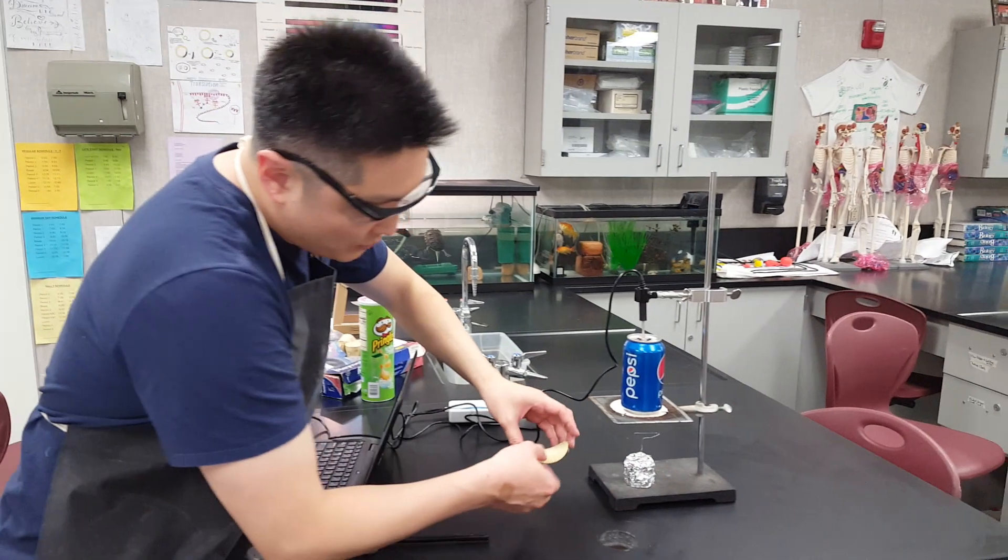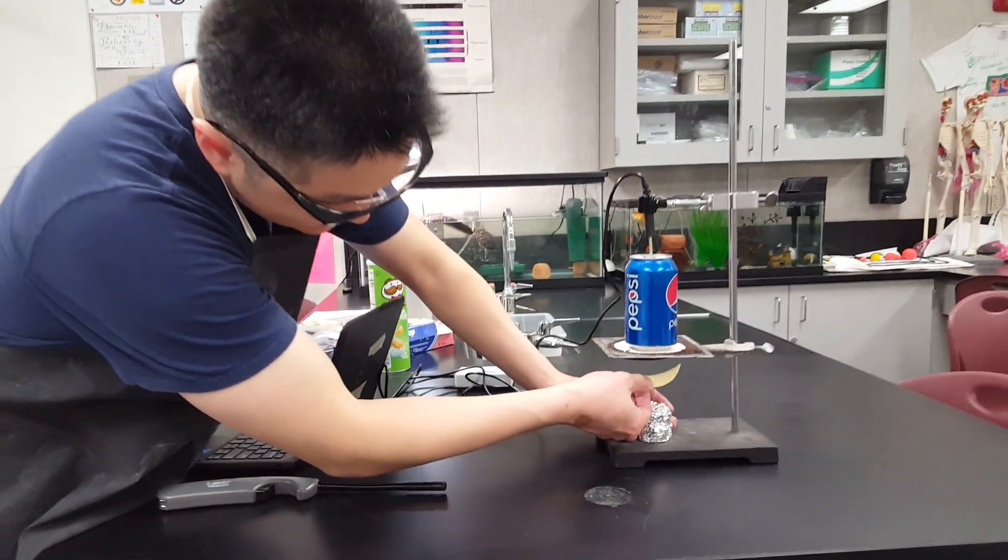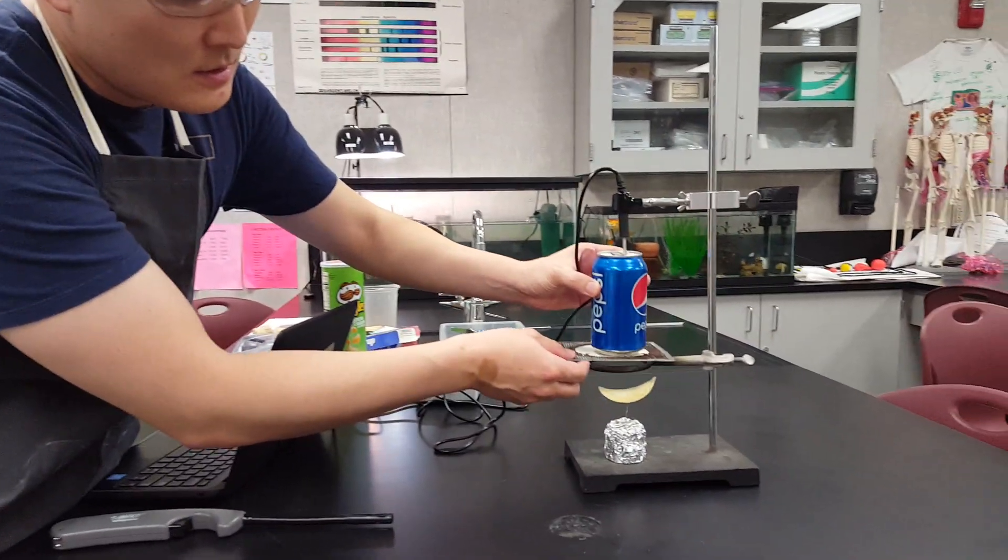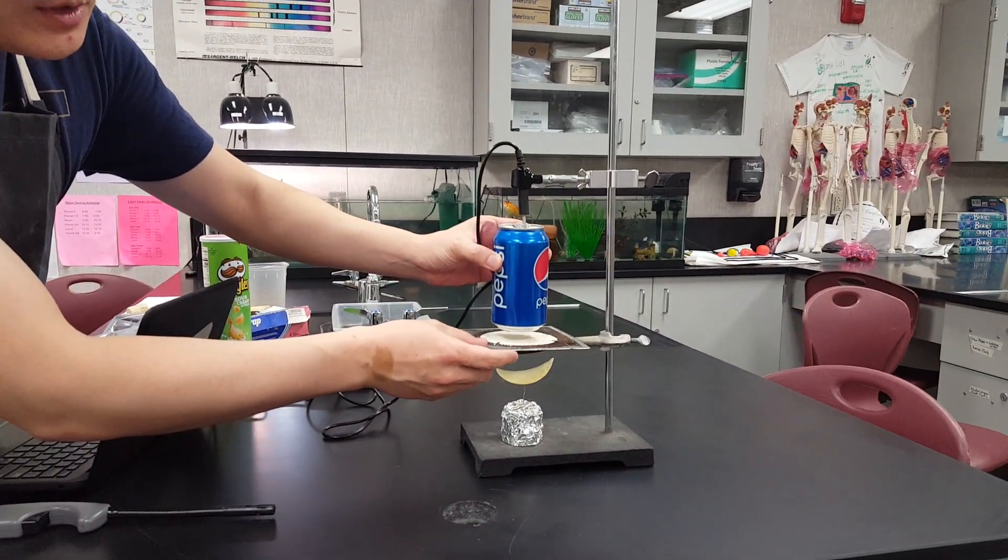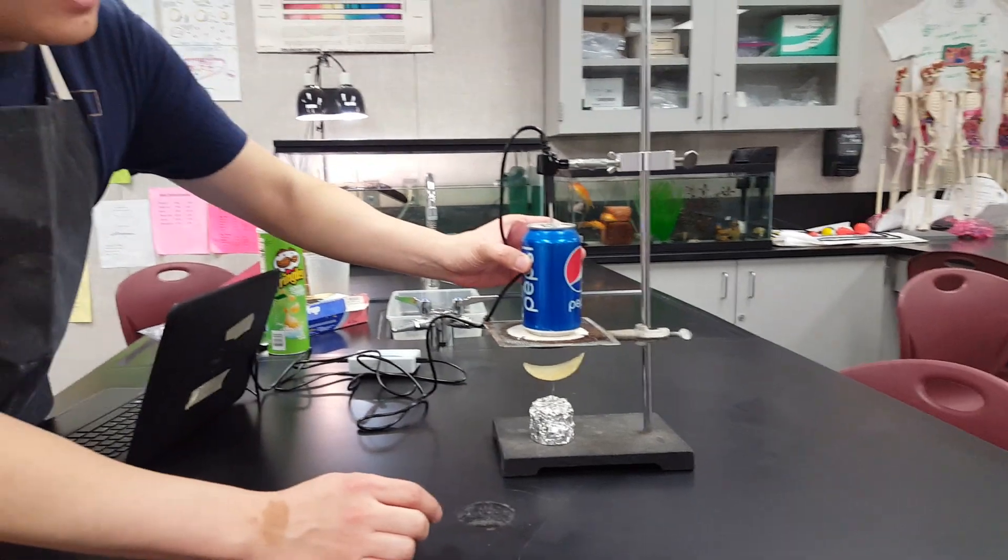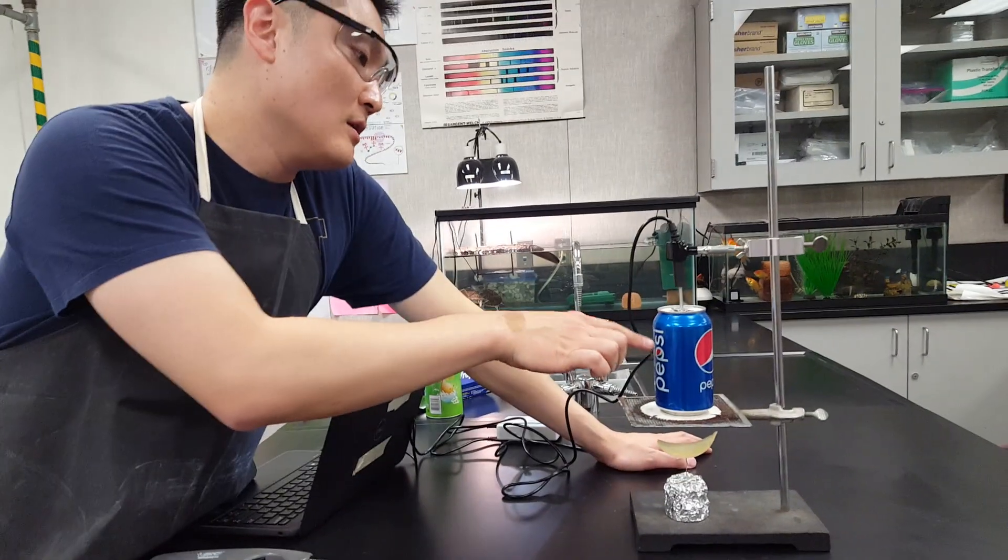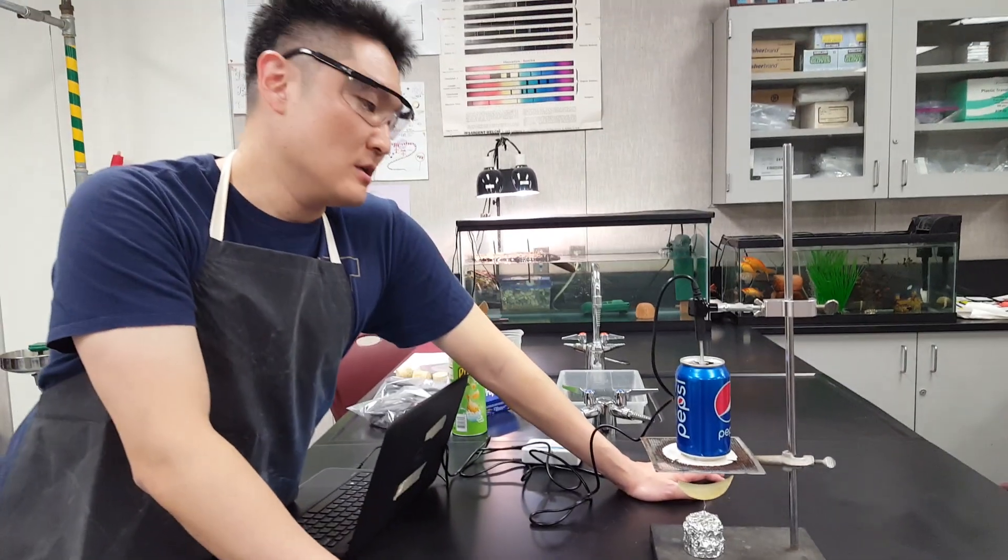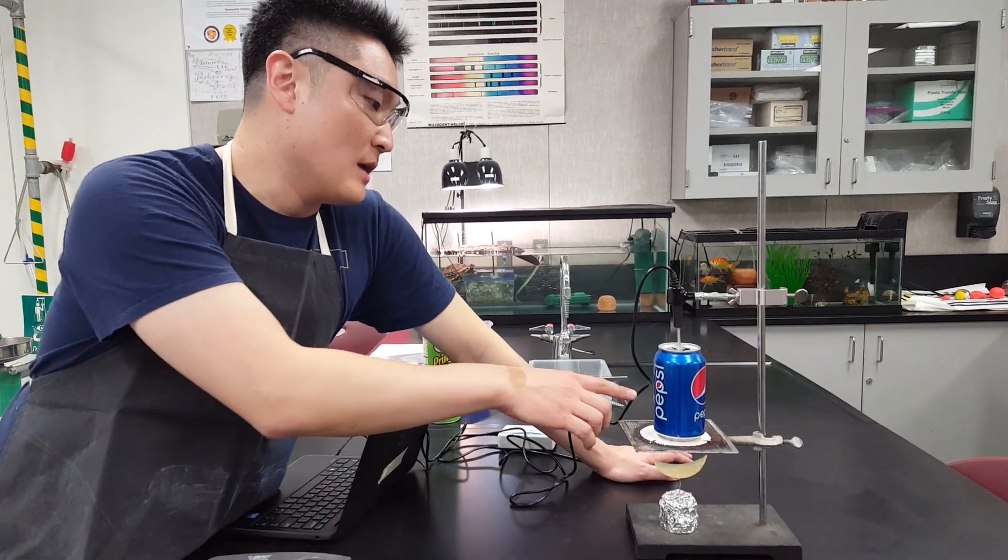You want to put the Pringles chip right on there so it sits under this ring clamp. And then on top of the ring clamp, you put a wire gauze and you're going to put your can, your soda can with room temperature water. Approximately 50 milliliters is good of tap water.